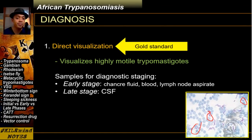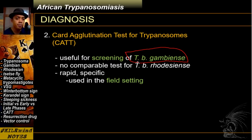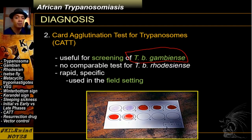In the field setting, you can't always do microscopy. In the field, they've been using the Card Agglutination Test for Trypanosomes, or CATT. This is useful for screening, but only for the Gambian form. Unfortunately, there is no comparable test for the Rhodesian form. It is rapid and very specific, and is used to detect the presence of trypanosome antigens in a particular sample in the field.